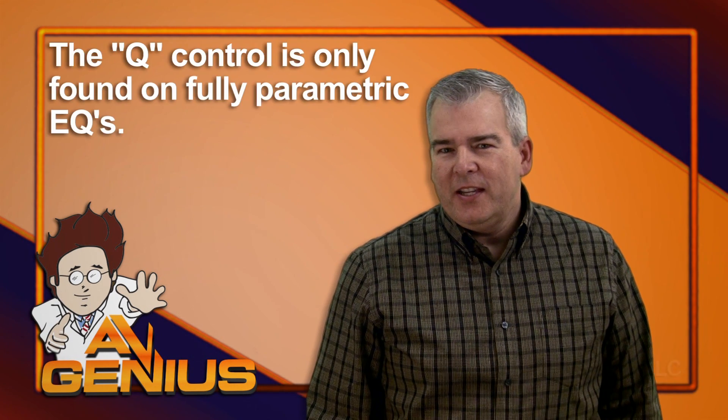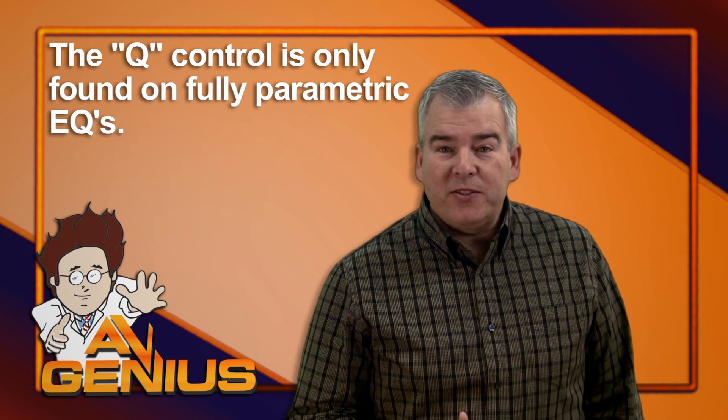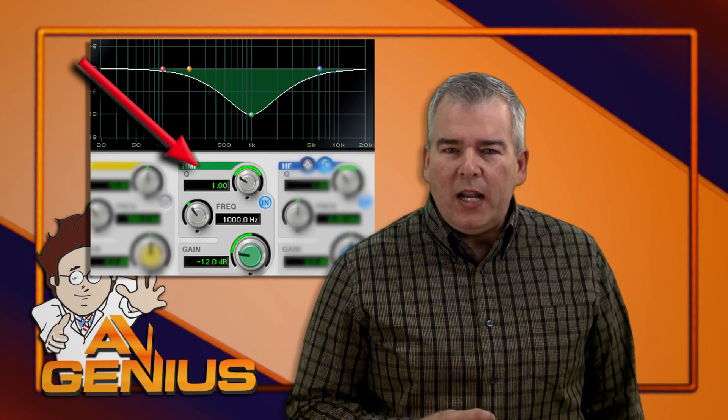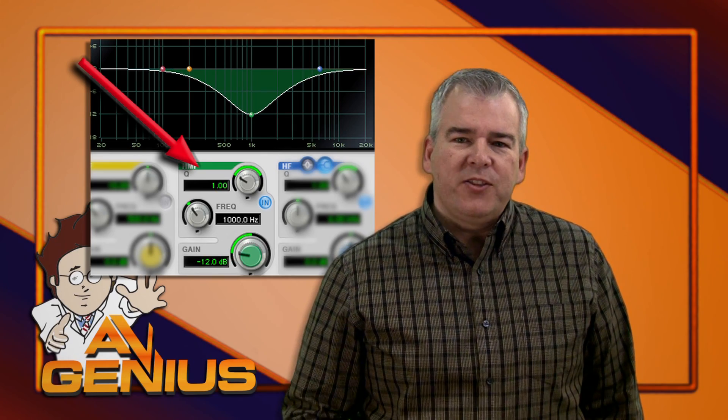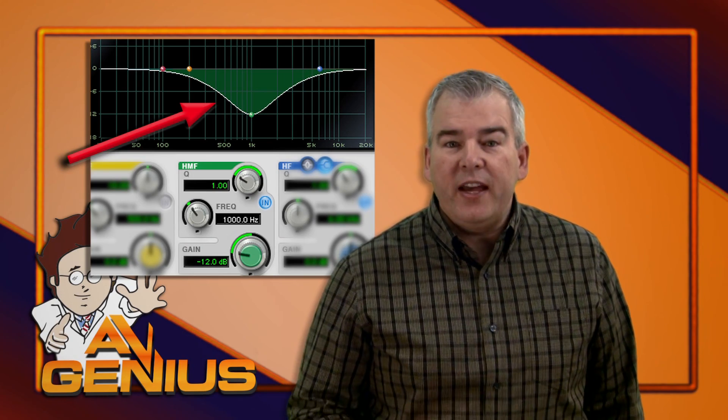The Q control is found on fully parametric EQs on some analog mixers and most digital ones. The Q, or quality control, represents the width of the frequency range that an EQ is going to affect.